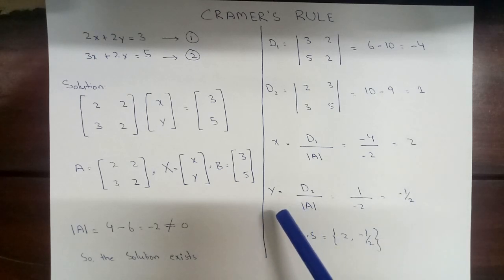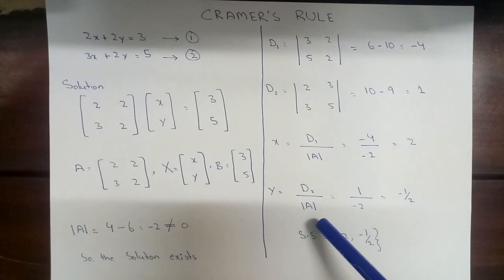In the same way, we will find out y: D2 divided by the determinant of A. The D2 was 1, and the determinant of A was minus 2.